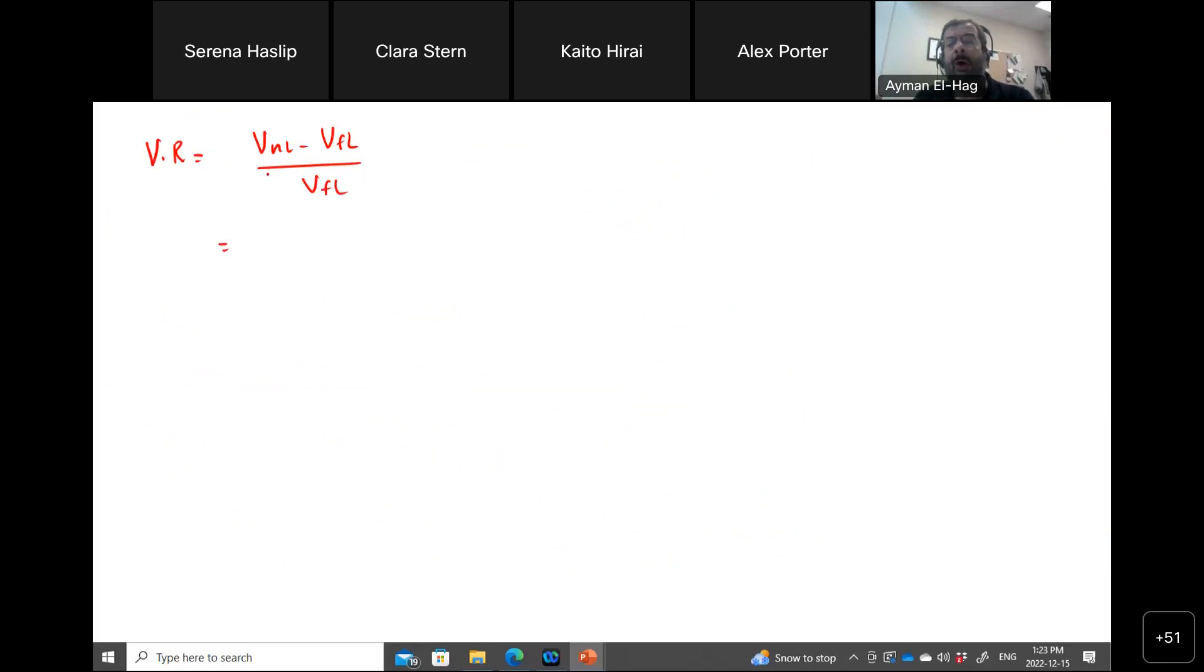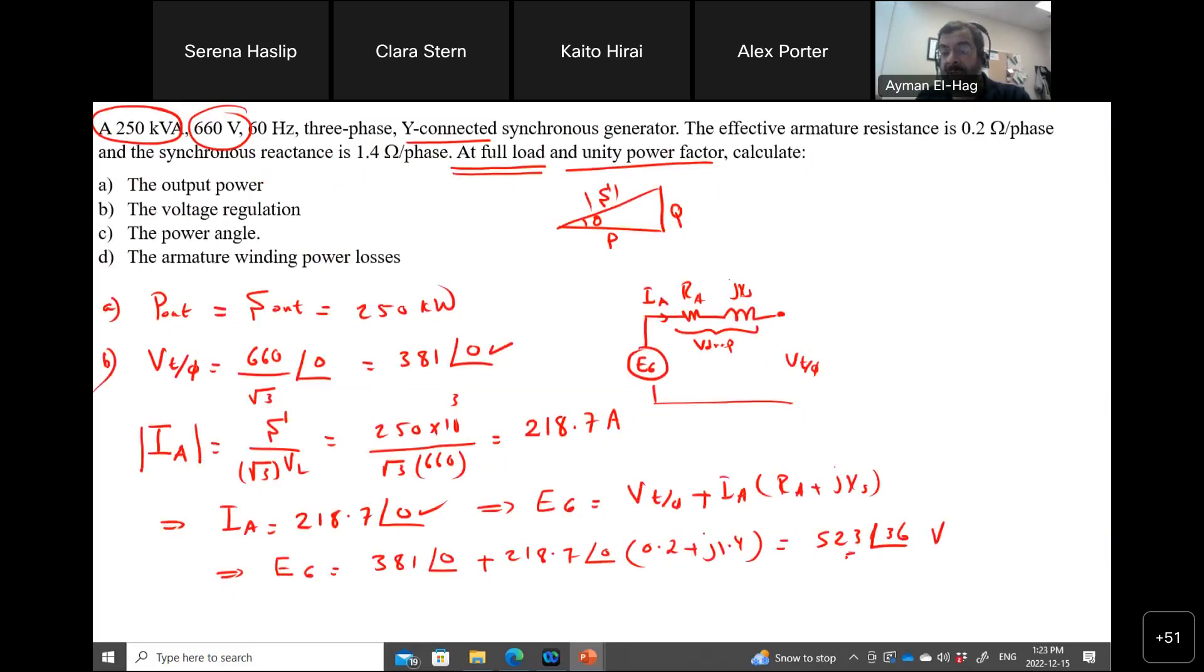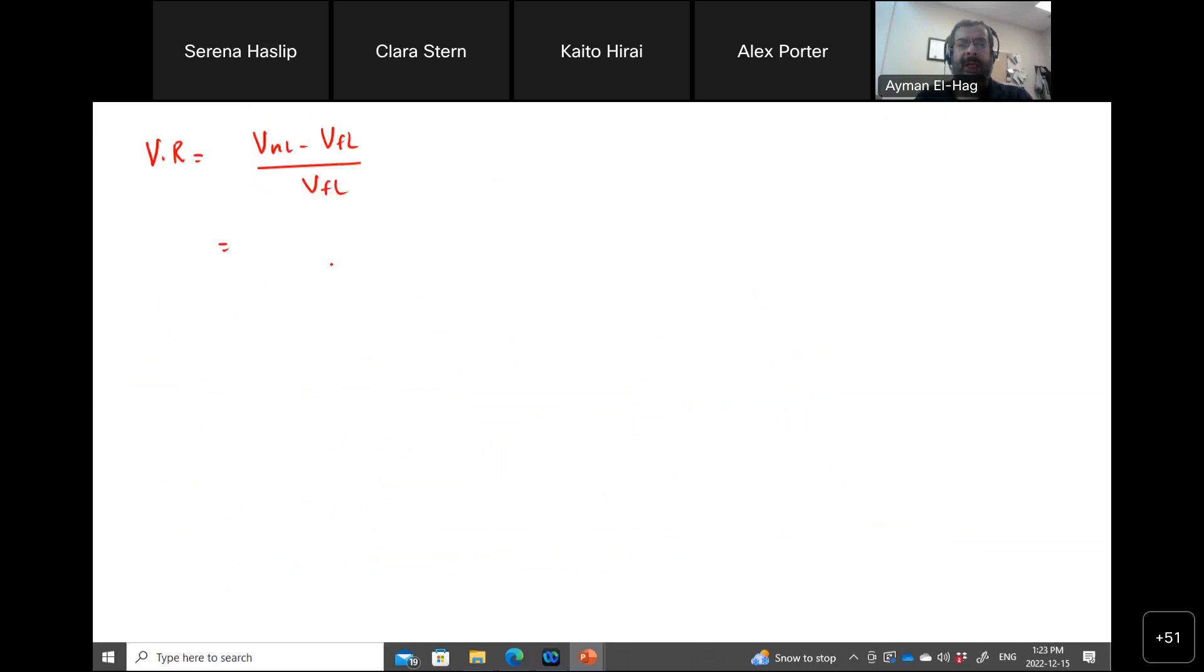So the V no load is basically nothing but your E_A, because at no load conditions, I_A will equal to 0, and the voltage at the terminal will be equal to E_A.